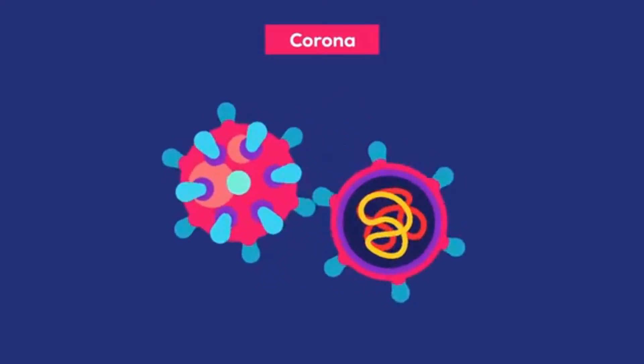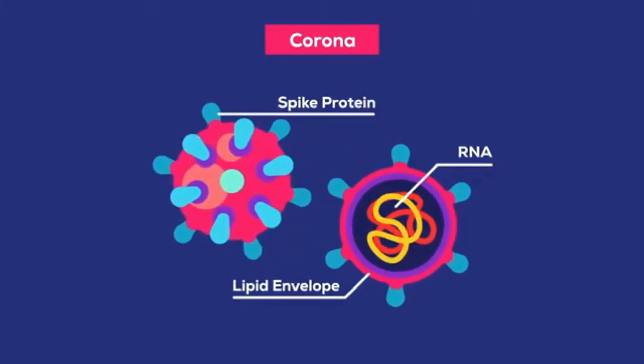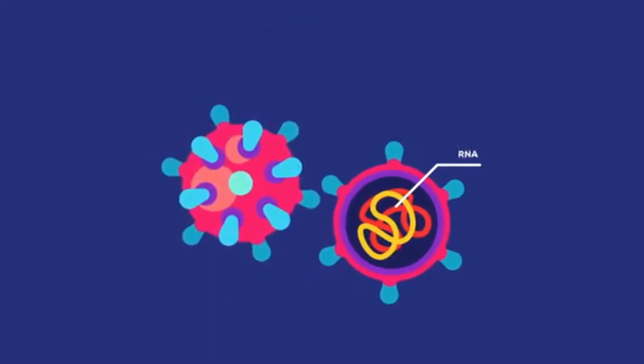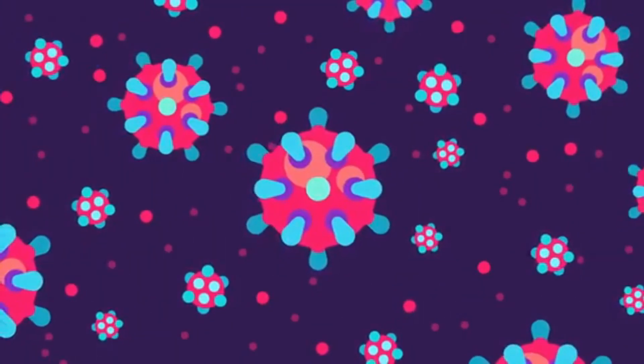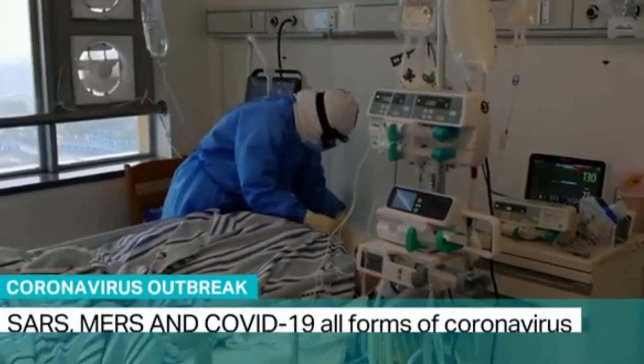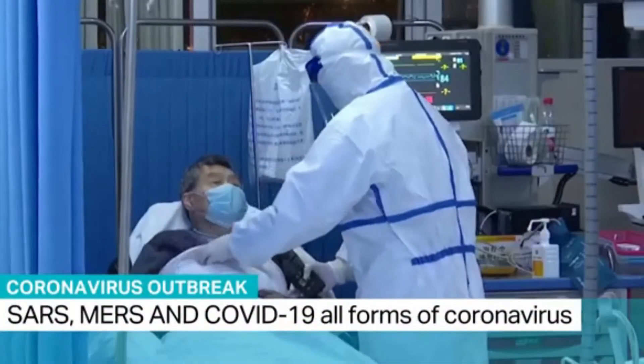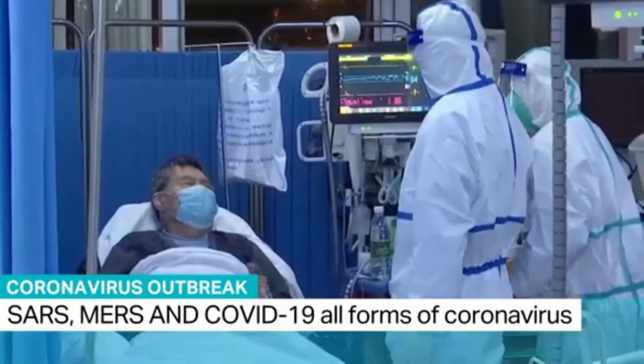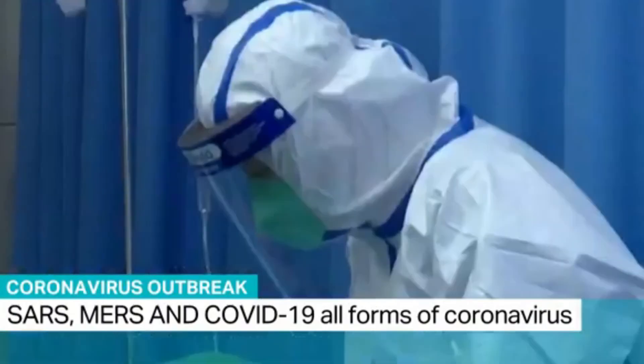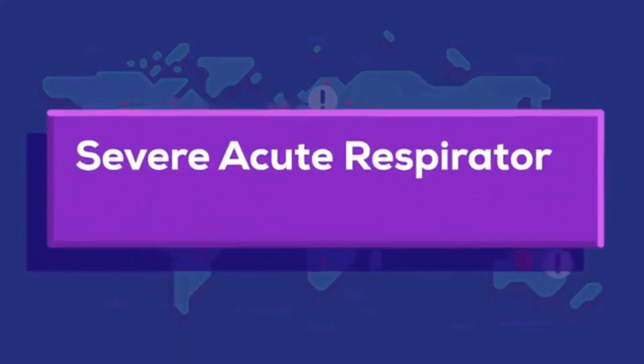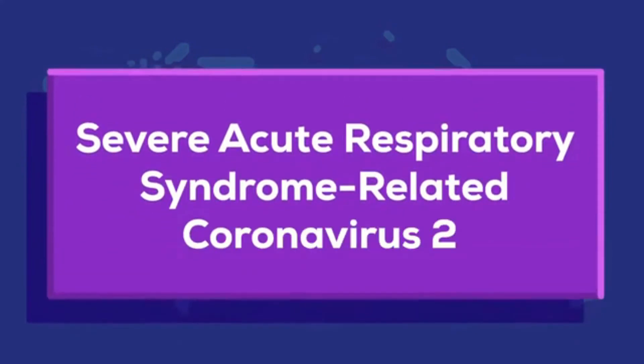Currently, there is no vaccine to prevent infection with the COVID-19 virus, but researchers are racing to create one. Coronaviruses are a family of viruses that cause illnesses such as the common cold, severe acute respiratory syndrome SARS, and the Middle East Respiratory Syndrome MERS. COVID-19 is caused by a virus that is closely related to one that causes SARS. For this reason, scientists named the new virus SARS-CoV-2.